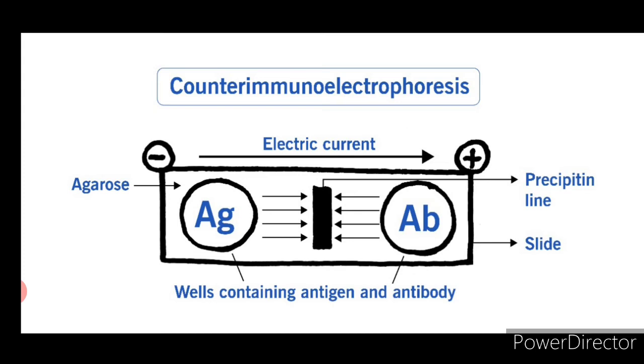If an antigen is strongly negatively charged so that it moves towards the anode in spite of this flow, then it is possible by a suitable arrangement of wells in an agar plate to drive antigen and antibody together by electrophoresis.